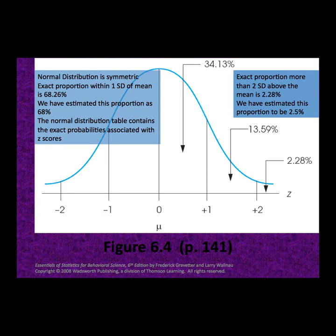Those probabilities are actually estimated probabilities. The actual probability of data that falls between a z-score of negative 1 and 1 is 68.26% of the data. Up to this point in the class, we have estimated this proportion as 68% of the data. The normal distribution table found in the back of the book contains the exact probabilities associated with z-scores.